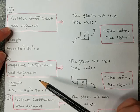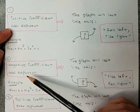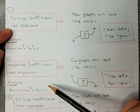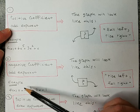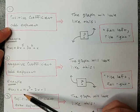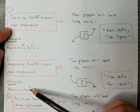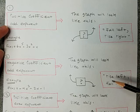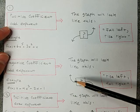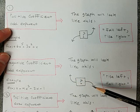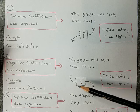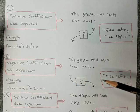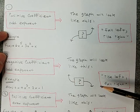The next possibility: if the leading term has a negative coefficient and an odd exponent — like this one here, where the coefficient is negative and the exponent is odd — then the graph will rise on the left and fall on the right. In the middle it might be wavy or more complicated, but that's what it looks like at the ends.